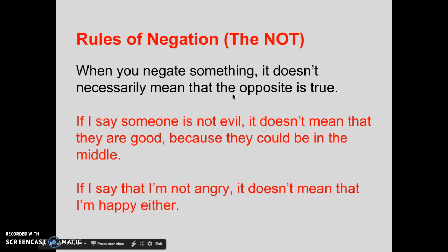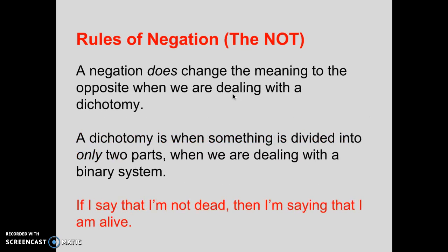When you negate something, it doesn't necessarily mean that the opposite is true. For example, if I say someone is not evil, it doesn't mean that they are good, because they could be in the middle. If I say I'm not angry, it doesn't mean I'm quite happy either — I could be somewhere in the middle. A negation does, however, change the meaning to the opposite when we're dealing with a dichotomy — when something is divided into only two parts, a binary system where it's one or the other, with no areas of gray.